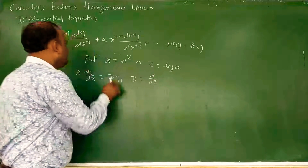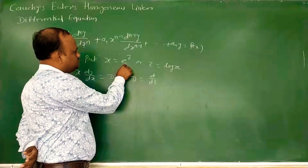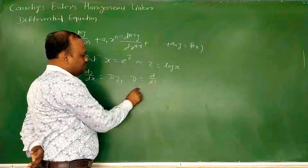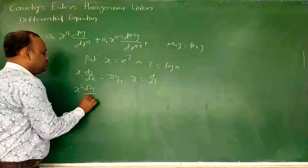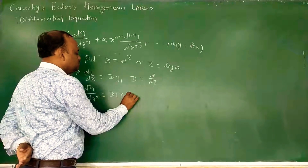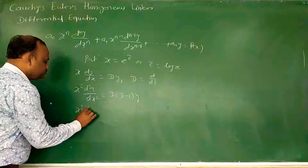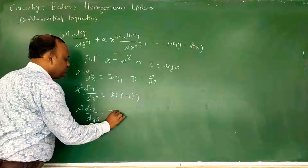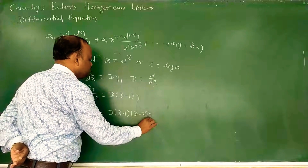Because the independent variable is changed from x to z when we use the substitution x = e^z, we define capital D = d/dz. Then x²(d²y/dx²) = D(D−1)y, and x³(d³y/dx³) = D(D−1)(D−2)y.